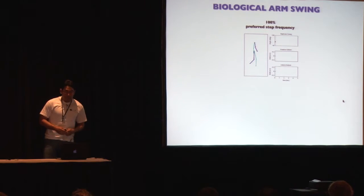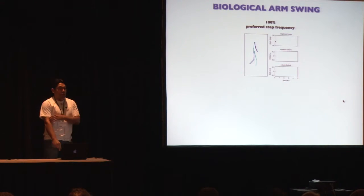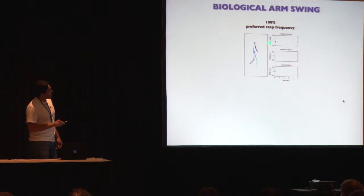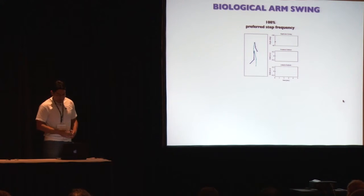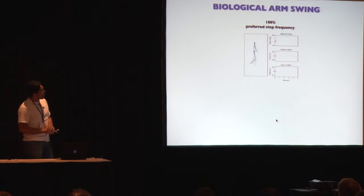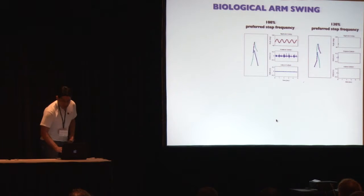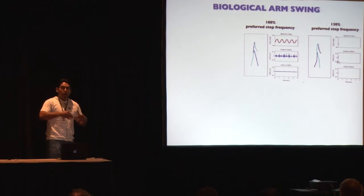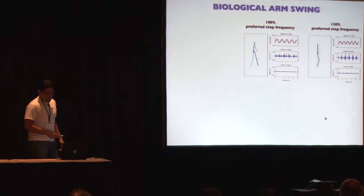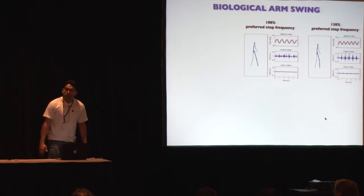Here are results from our biological arm swing experiments at the preferred step frequency. In the animation, the blue lines denote the right side of the body, and the red dot denotes the position of the biological arm center of mass. We can see EMG activation at the posterior deltoid during arm swing, but interestingly the anterior deltoid remains relatively silent. At the fastest step frequency of 130%, we see increasing frequency of arm swing with slightly decreased amplitude, increasing posterior deltoid activity, while the anterior deltoid remains relatively silent — suggesting the forward motion of the arm is under passive dynamics.